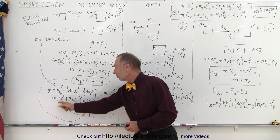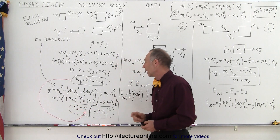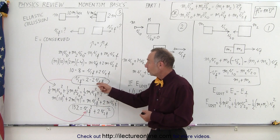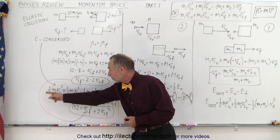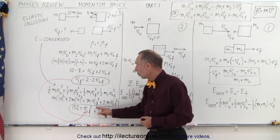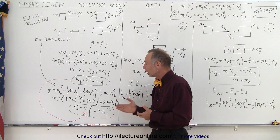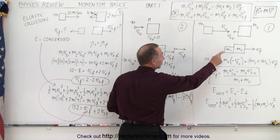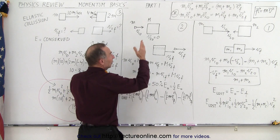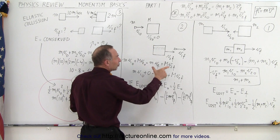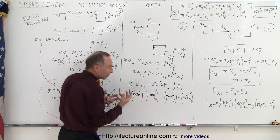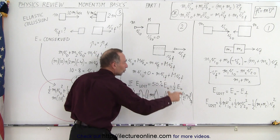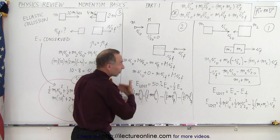From the momentum equation we solve for V1 final in terms of V2 final. Since energy is also conserved, the initial kinetic energy of the two blocks equals the final kinetic energy of the two blocks — giving a number on the left side and an equation in V1 final and V2 final squared on the right. We then substitute our expression for V1 final into the energy equation, yielding a quadratic equation in V2 final only, which we solve directly. That gives us both final velocities.